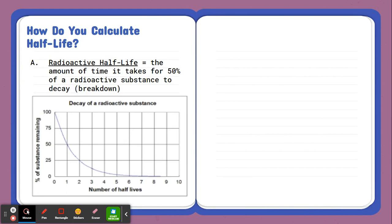So this is going to be the amount of time it takes for about 50% of that radioactive substance to decay or break down. You can see that displayed in this graph here. The number of half-lives, looking at one half-life, leaves us with about 50% of that substance remaining. When we go to the second half-life, we only have about half of that 50, so that would be 25%. And we continue to see that breakdown over time.